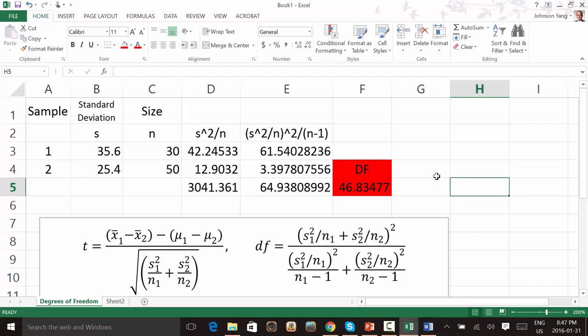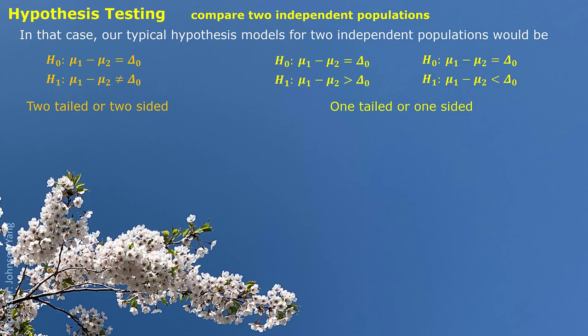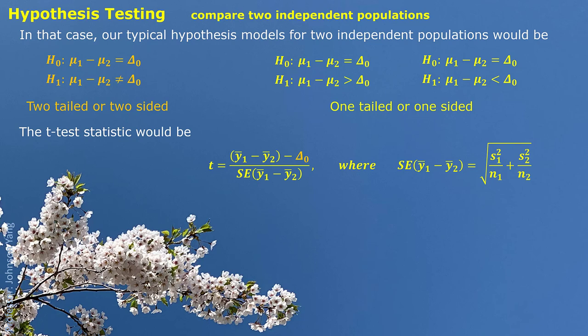Here's the tip for you to calculate degrees of freedom. The typical hypothesis models for two independent populations are described as the difference of two population means equal to delta-zero for the null hypothesis, and the difference not equal to delta-zero for the alternative — this is the two-tailed or two-sided model. Similarly, if the alternative considers only one side — either the difference greater than delta-zero or smaller than delta-zero — these are called one-tailed or one-sided models.